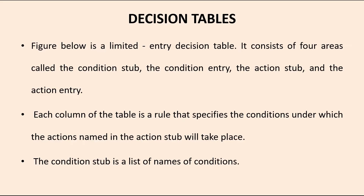So what are the components of the decision table? We have four areas: condition stub, condition entry, action stub, and action entry. Each column of the table is a rule that specifies the conditions under which actions named in the action stub will take place.